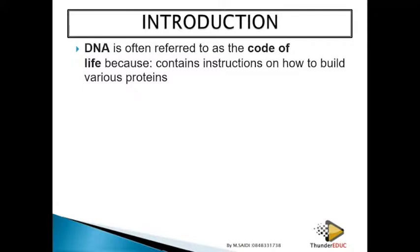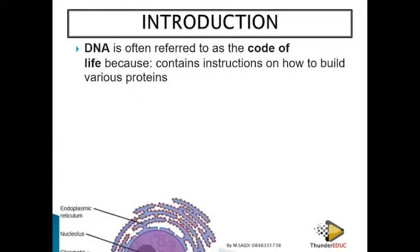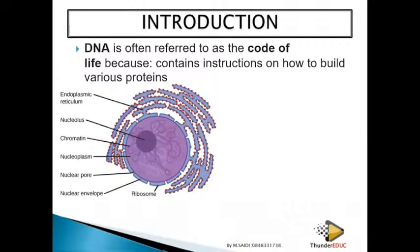DNA is often referred to as the code of life because it contains instructions on how to build various proteins. Our body is made up of proteins, and what directs the making of proteins is DNA. That is why we say DNA codes for life. Let's look at where DNA is found.